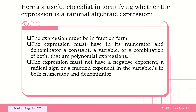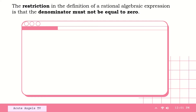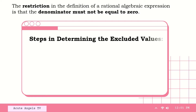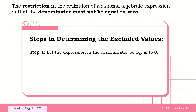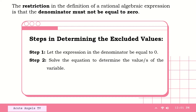Now, how are we going to determine the excluded values or the restrictions in a rational algebraic expression? The restriction in the definition of a rational algebraic expression is that the denominator must not be equal to 0. Here are the steps in determining the excluded values. Step 1: let the expression in the denominator be equal to 0, so we equate the denominator to 0. Step 2: solve the equation to determine the value or values of the variable.